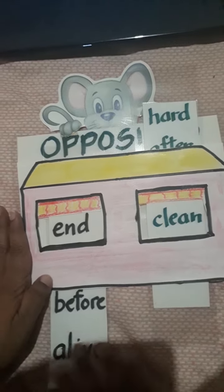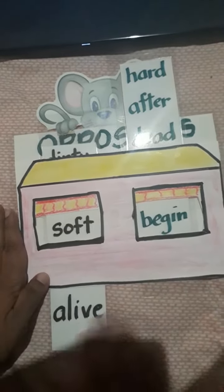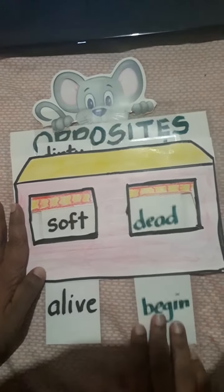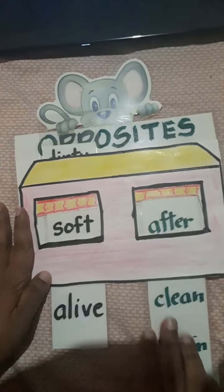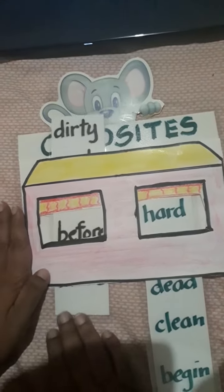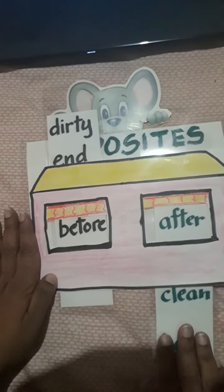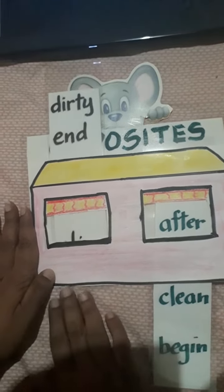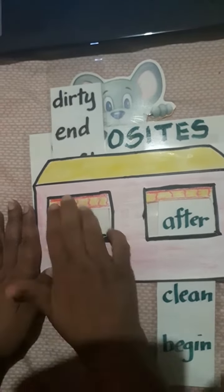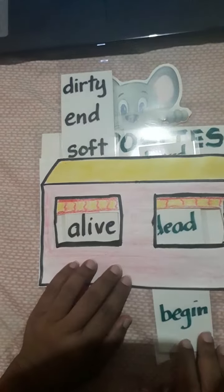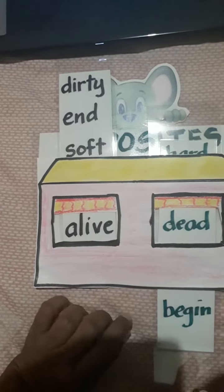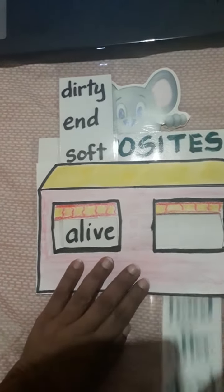End and begin. Soft — the opposite of soft is hard. Before and after. Alive — the opposite of alive is dead.